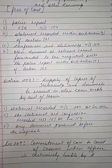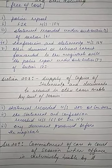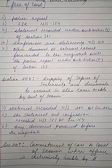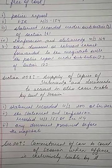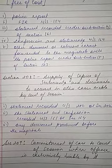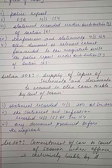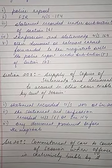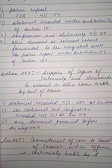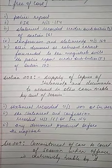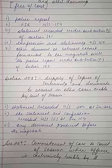Section 209 deals with commitment of a case to the court of session when the offense is exclusively triable by it. Where a case has been instituted — whether from a police report or otherwise than a police report — and it appears to the magistrate that the offense is exclusively triable by the court of session, he will notify the public prosecutor of the commitment of the case to the court of session and will send to the court the records of the case and documents or articles to be produced in evidence.